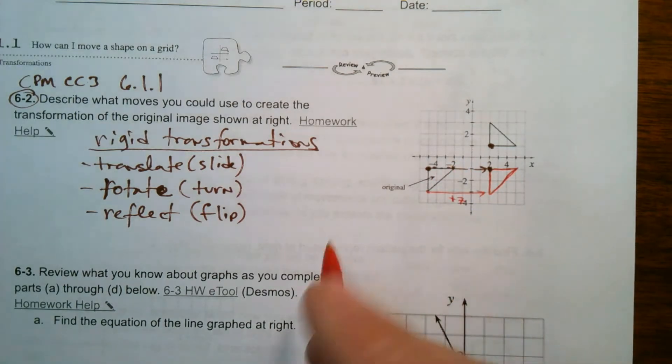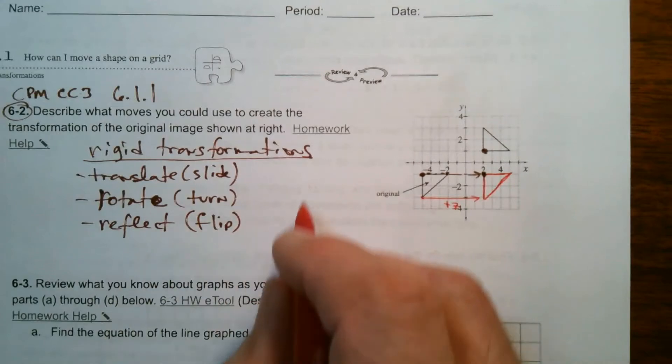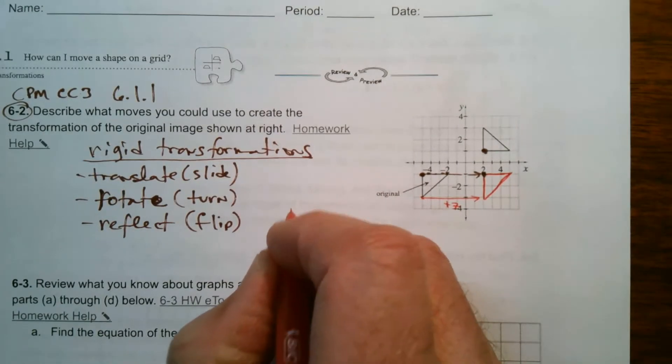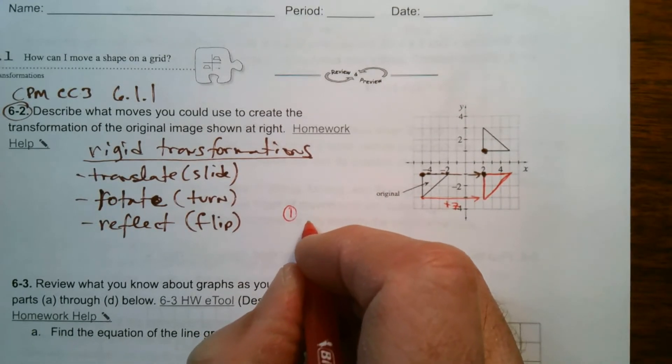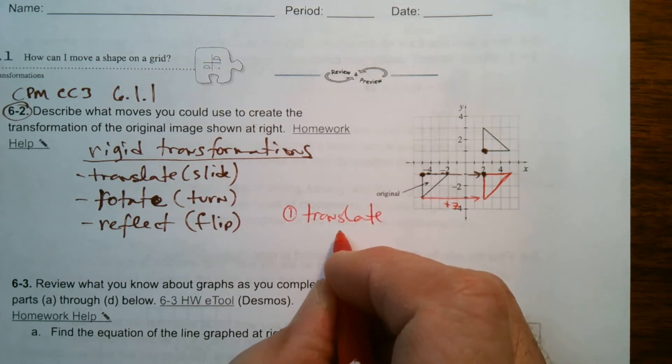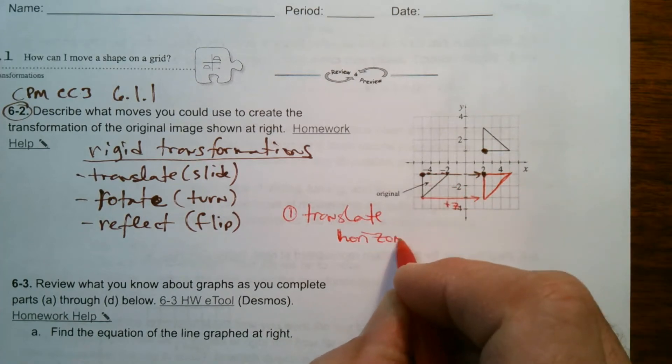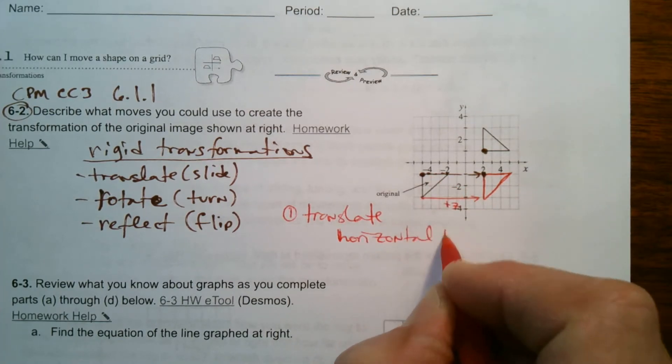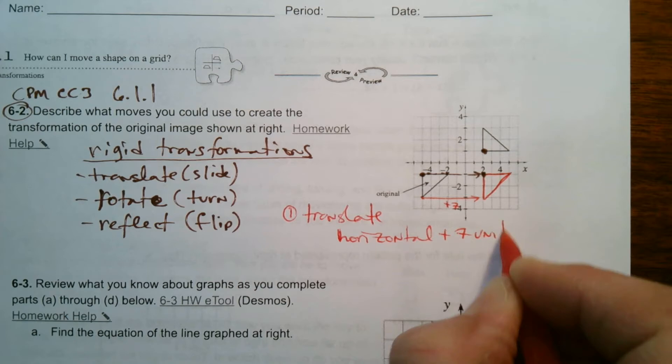So we would slide. So what we're going to call this then is what's the two moves. So first move is going to be a translate or slide horizontal. That's the direction. It's going that way. Horizontal plus seven units.